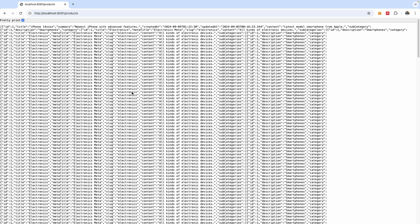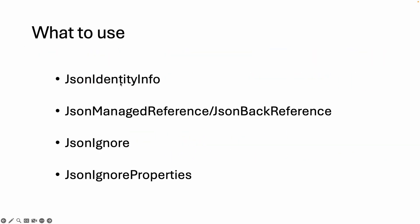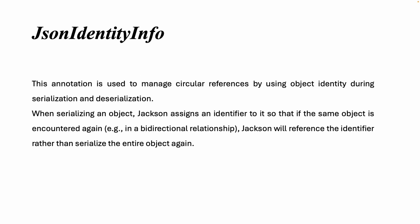Let's solve this problem. The first solution we're going to use is @JsonIdentityInfo. There are four different solutions and I'll show you how to apply them one after the other. @JsonIdentityInfo is used to manage circular appearances by using object identity during serialization and deserialization. Jackson assigns an identifier to an object so that if the same object is encountered again in a bidirectional relationship, it references the identifier rather than re-serializing the entire object.